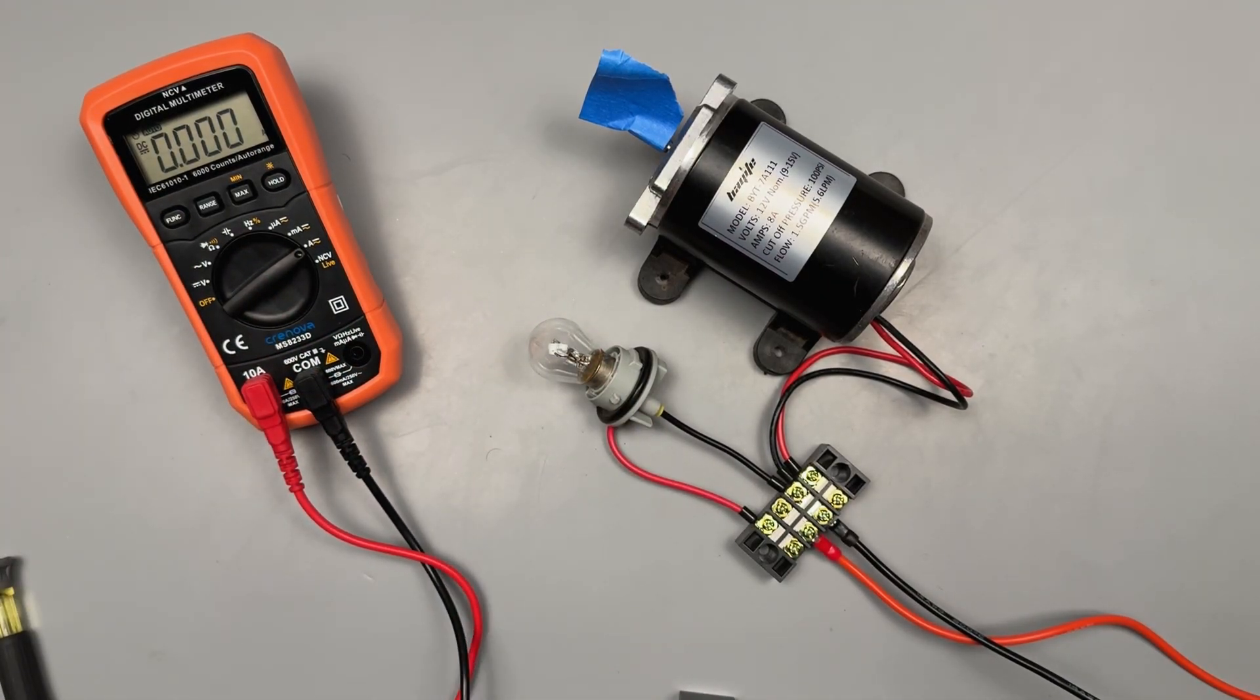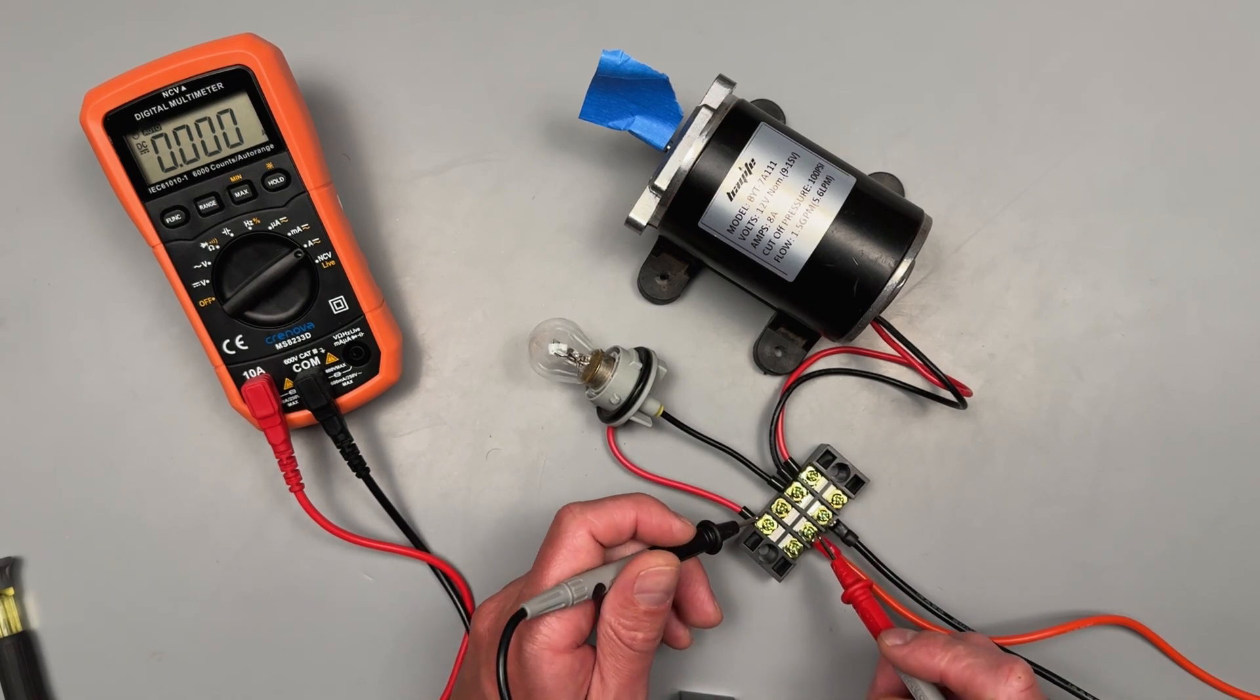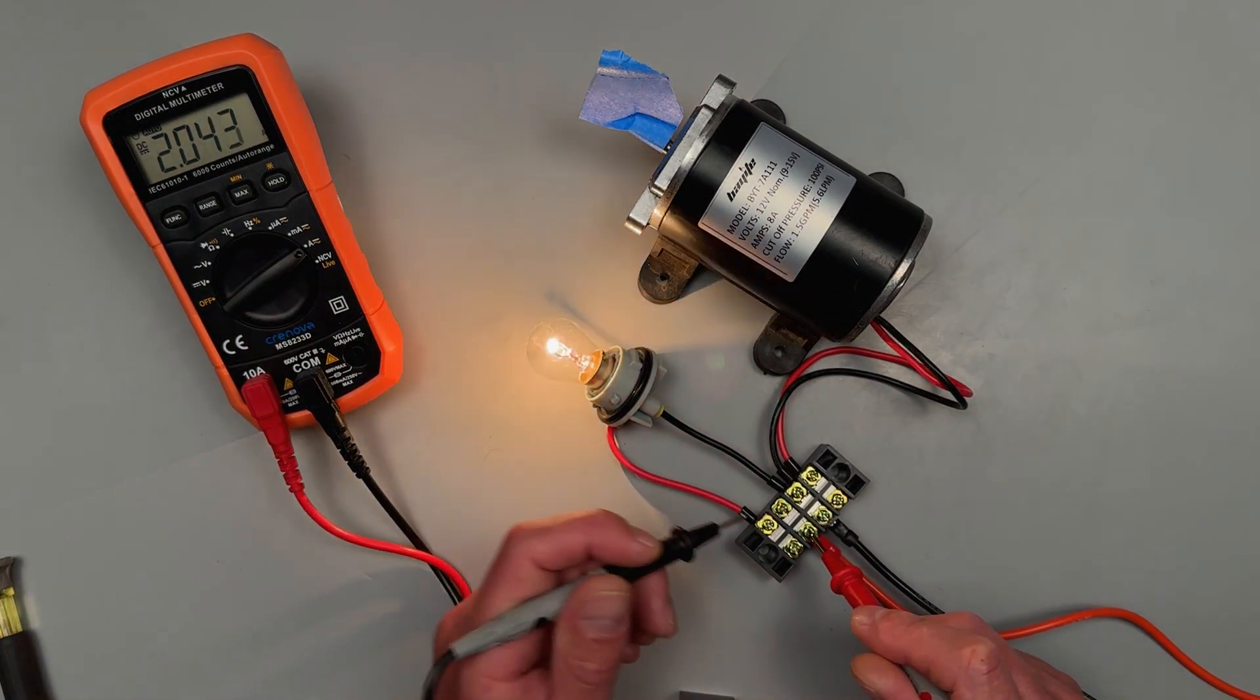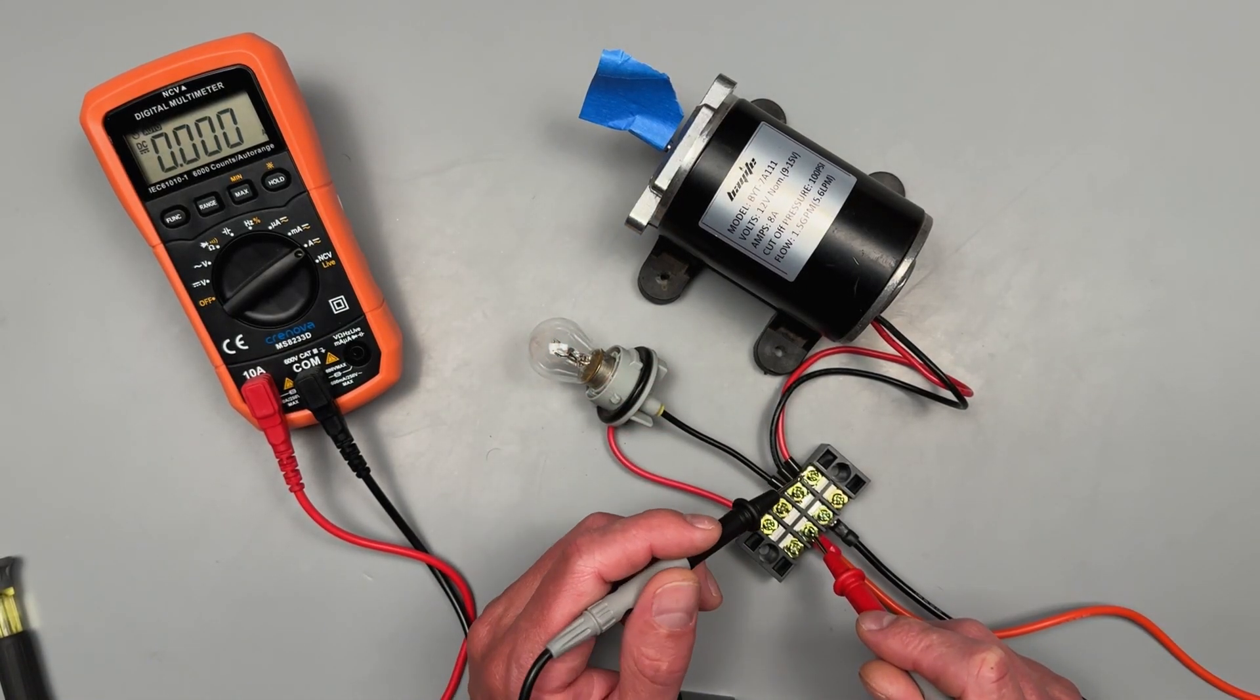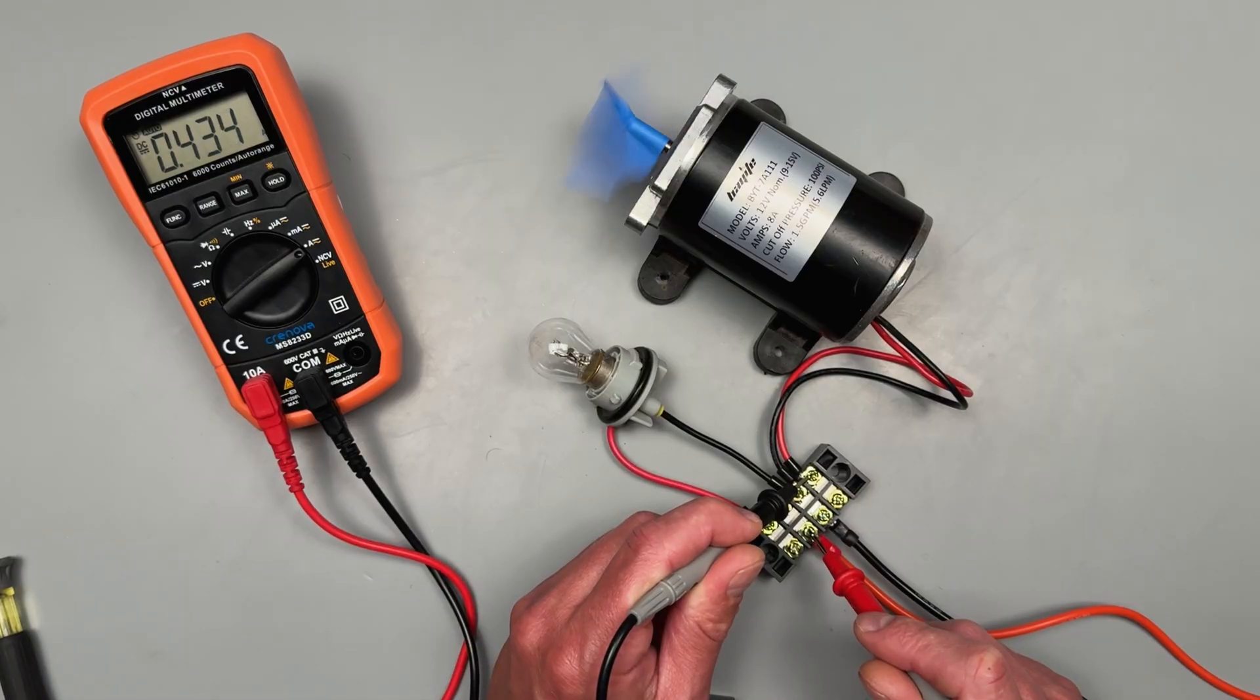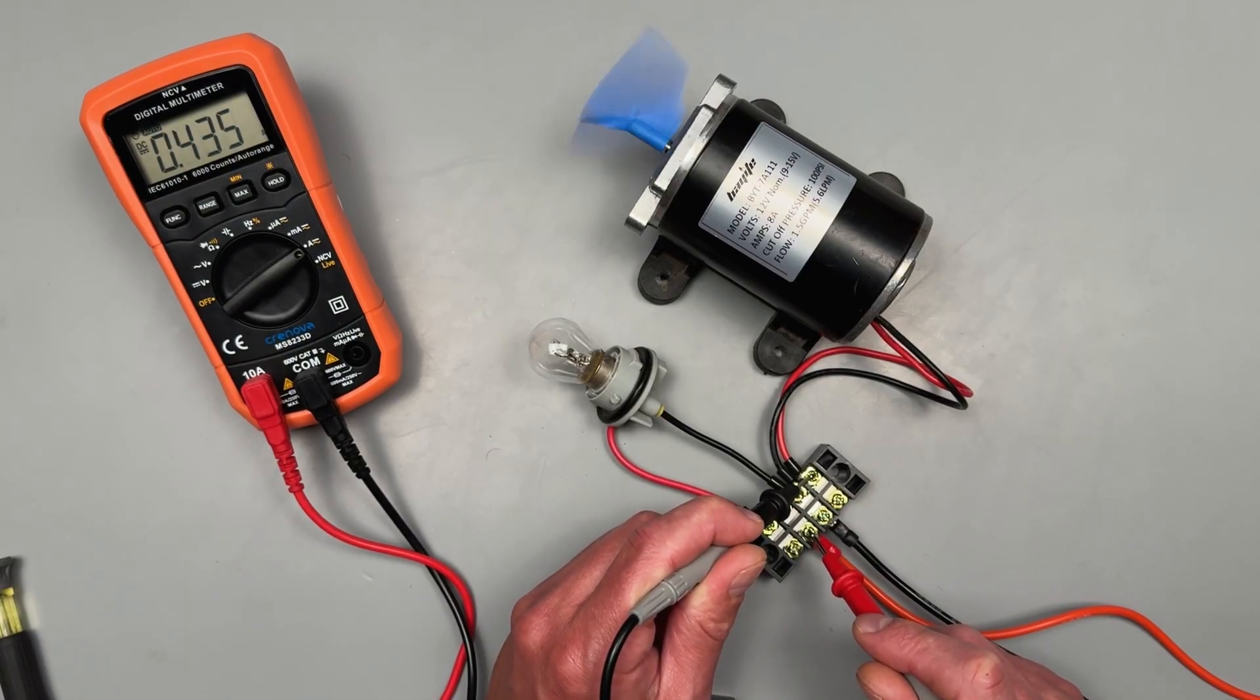So something that we can do is we can just do this light bulb. If you're testing like a headlight, we can see it pulls two amps. And then we have like our motor here. And that's going to pull 400 milliamps.